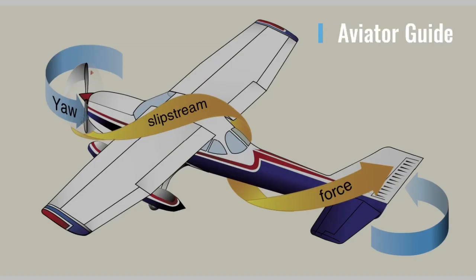The high-speed rotation of an aircraft propeller gives a corkscrew or spiraling rotation to the slipstream. At high propeller speeds and low forward speed, as in takeoffs and approaches to power-on stalls, this spiraling rotation is very compact and exerts a strong sideward force on the aircraft's vertical tail surface. When this spiraling slipstream strikes the vertical fin, it causes a turning moment about the aircraft's vertical axis. The more compact the spiral, the more prominent the force. As forward speed increases, the spiral elongates and becomes less effective.